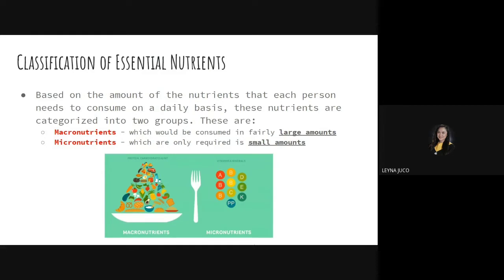We can classify our essential nutrients into two groups. Number one is macronutrients — macro meaning large — which should be consumed in fairly large amounts. Number two is micronutrients — micro meaning small — which are only required in small amounts. These are the two classifications of essential nutrients: macronutrients consumed in large amounts, and micronutrients needed in small amounts.